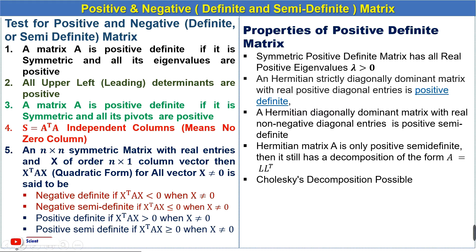Welcome to my YouTube channel Scientific_Math. We are studying positive and negative definite and semi-definite matrices. In the previous lecture we solved an example related to Test 1, and in this lecture we will solve an example related to Test 2. If all upper-left leading determinants are positive, then the given matrix is a positive definite matrix.